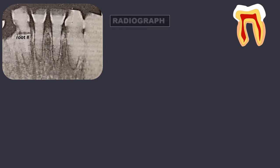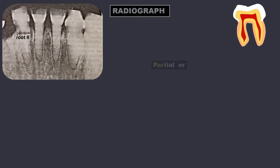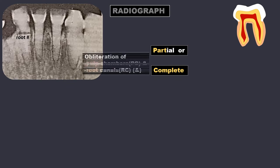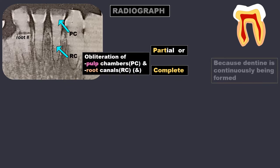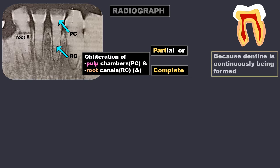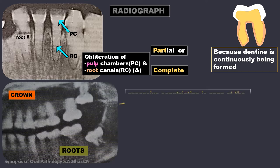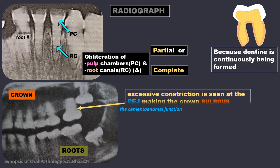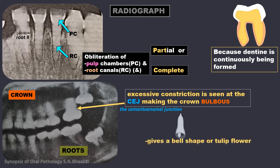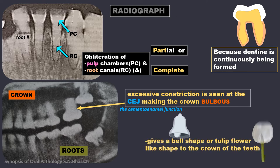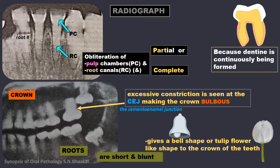The radiographic feature pathognomonic of DI is partial or complete obliteration of the pulp chambers and the root canals. This is because, though defective, the dentine is being continuously formed. Looking at the crown and the roots, excessive constriction is seen at the CEJ, making the crown bulbous, which gives a bell shape or tulip flower-like shape to the crown of the teeth. The roots are short and blunt.